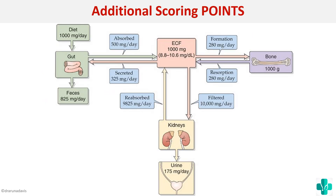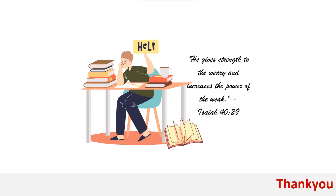For additional scoring points, you can write about the calcium pool present in the blood. A flow chart shows how calcium enters the body, is absorbed in the intestine, interacts with bone, and is excreted in the urine. We need at least one gram per day since around 825 mg per day is lost in feces and 175 mg in urine, so the ECF pool must be maintained at normal values.